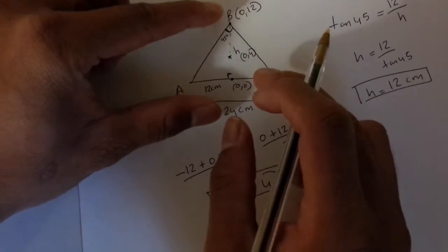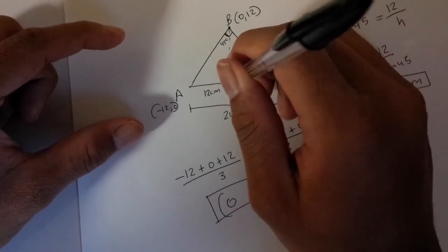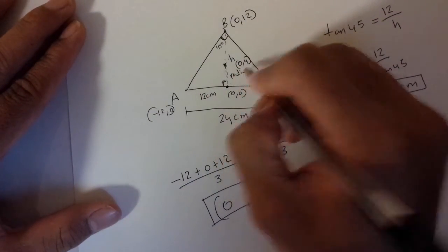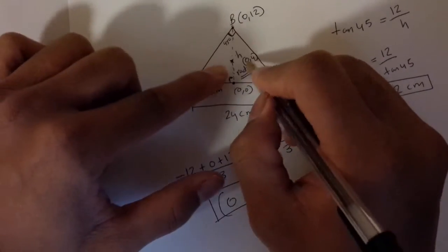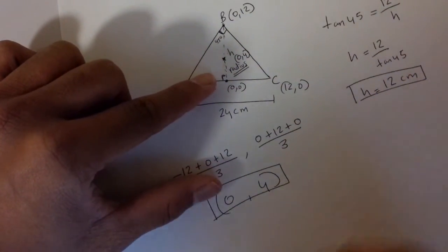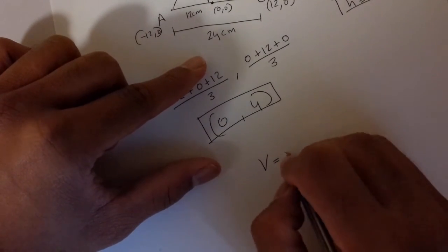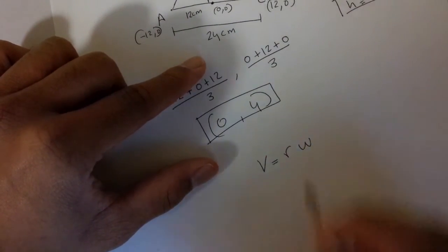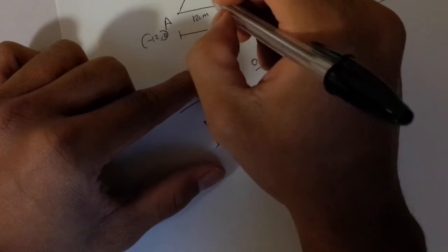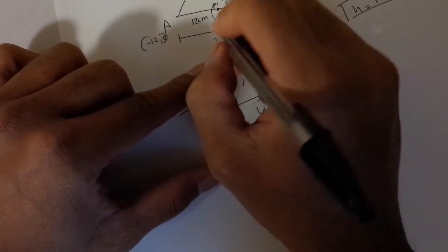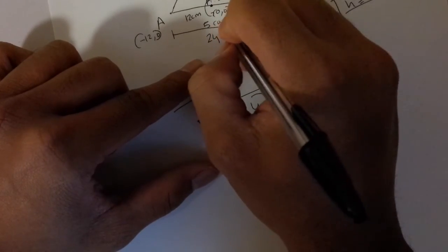As this lamina is rotating about this point, this would be the radius which is 4 centimeters. And we know the formula V is equal to R omega where omega is the angular speed which is given as 5 radians per second.